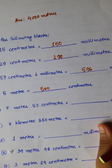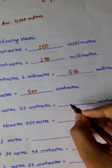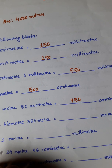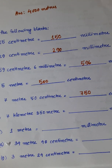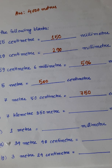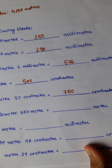That is 750 centimeters. Next: 7 kilometers 350 meters is equal to dash meters. We know 1 kilometer is 1000 meters, so 7 kilometers is 7000 meters. 7000 plus 350 is equal to 7350 meters.